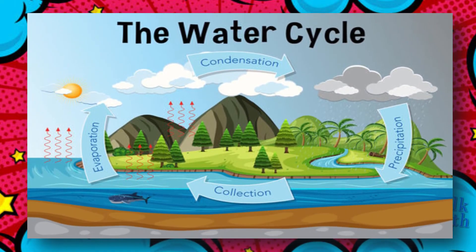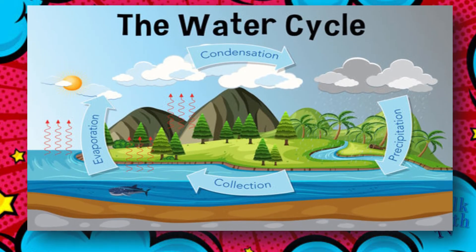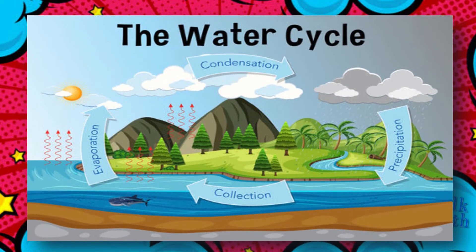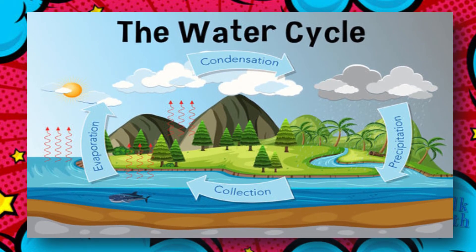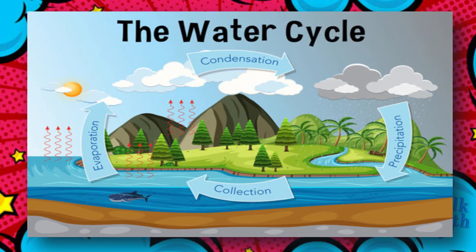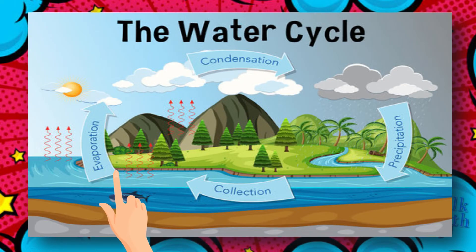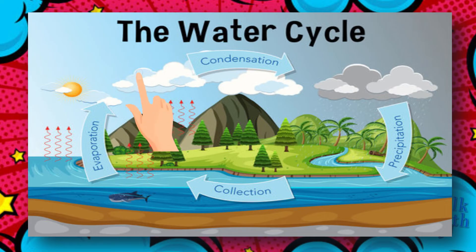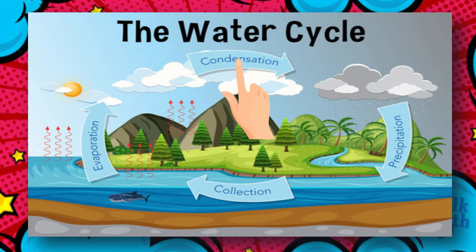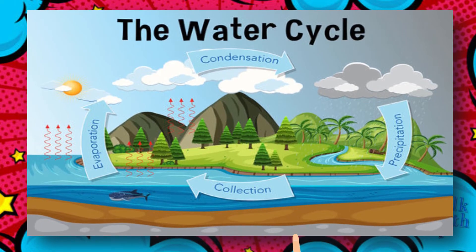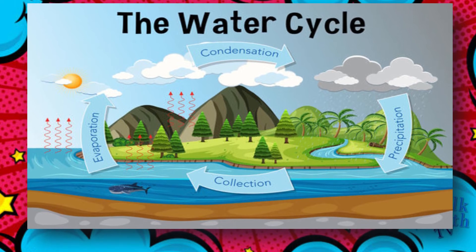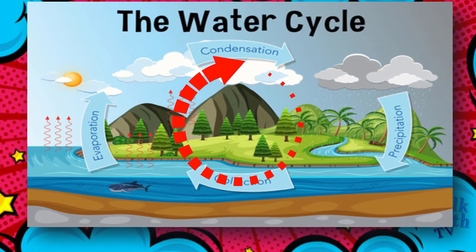The water cycle shows the continuous movement of water within the Earth and atmosphere. It is a complex system that includes many different processes. By evaporation, liquid water present in rivers, oceans, seas and other water bodies evaporates into water vapour and forms clouds. By condensation, these clouds form small droplets of water, and by precipitation, these droplets fall back onto Earth as rain and snow, filling water bodies again. And this cycle goes on and on.